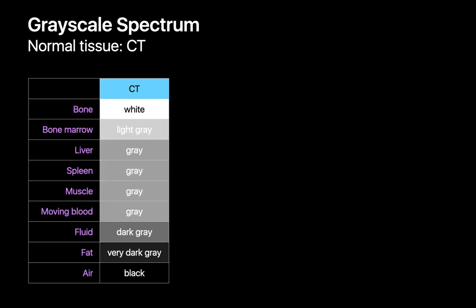When reading a CT, pathology may often present as a deviation in the grayscale color of a structure. For example, bone that's normally white may appear focally dark gray if there's a lytic metastasis. Reading CT requires us to know what the normal grayscale colors of different structures are. Remembering these isn't too tough since we're exposed to x-ray images all the time outside of medicine, practically since we were kids watching TV.